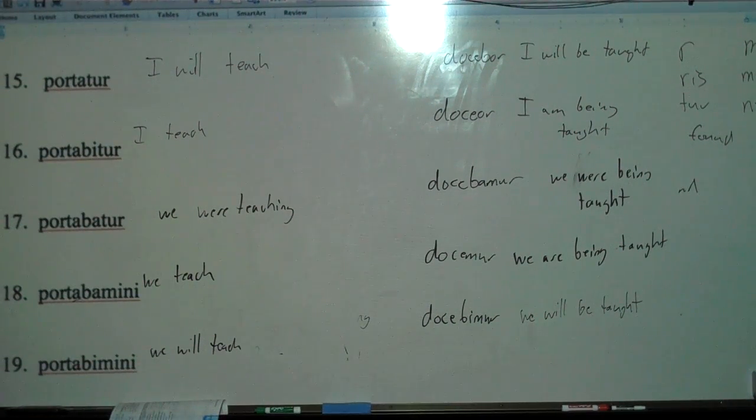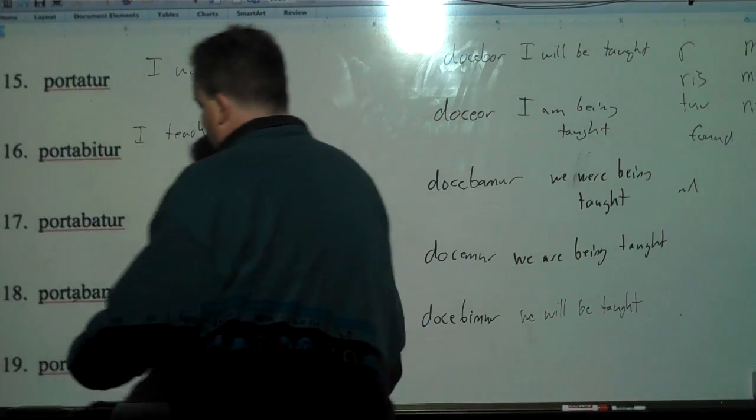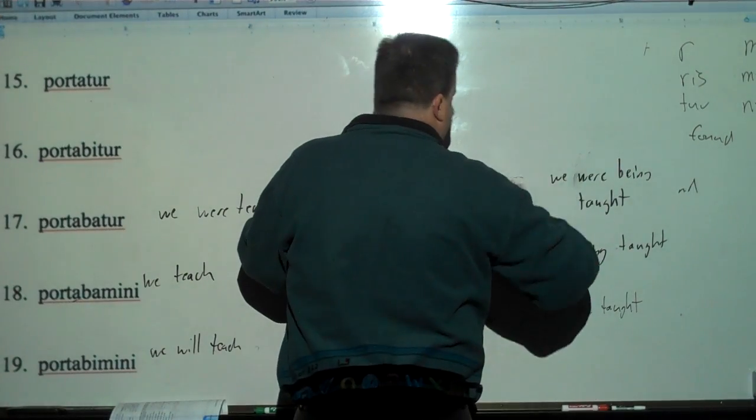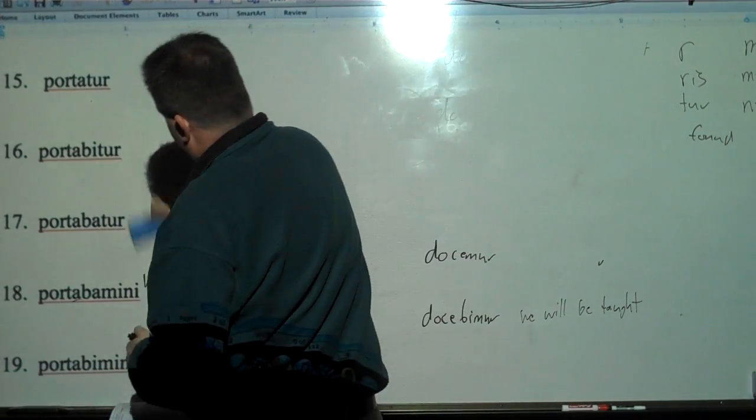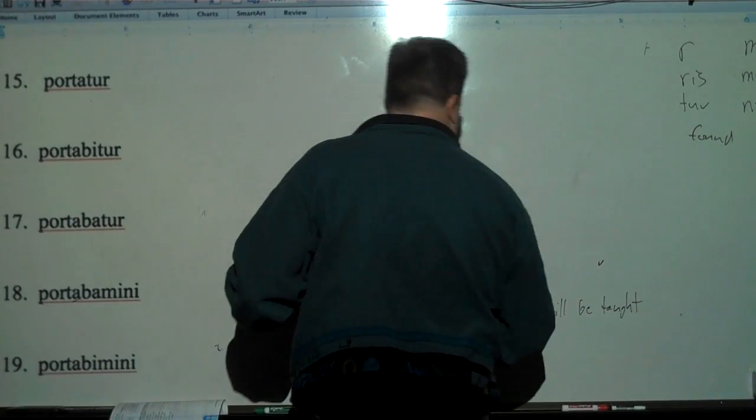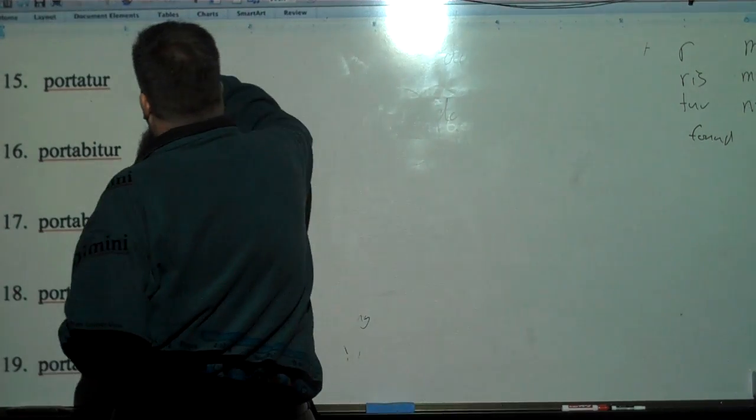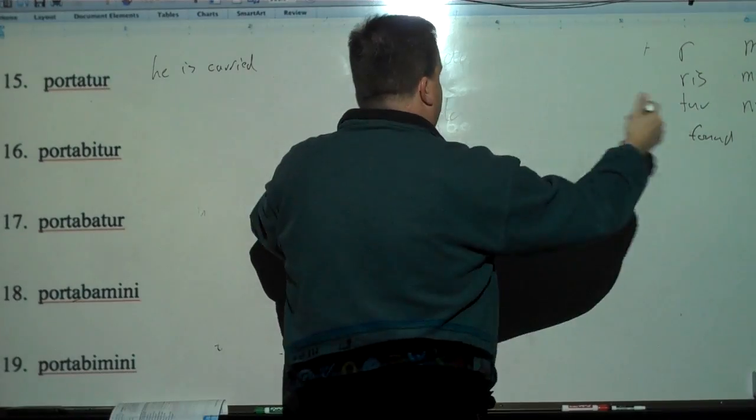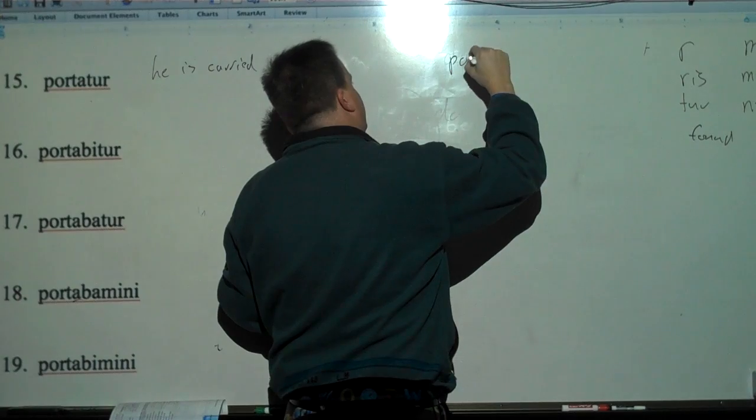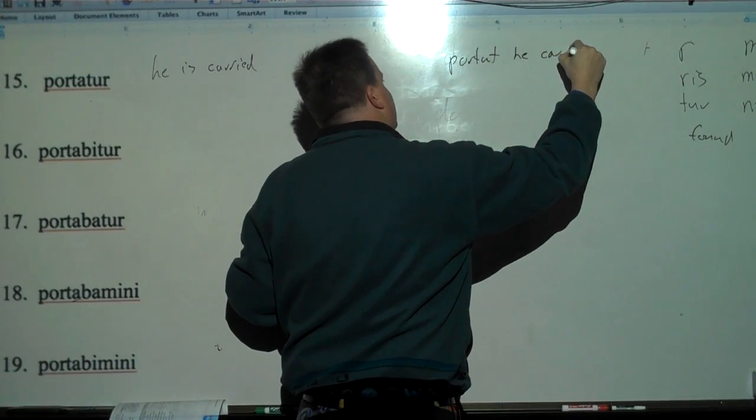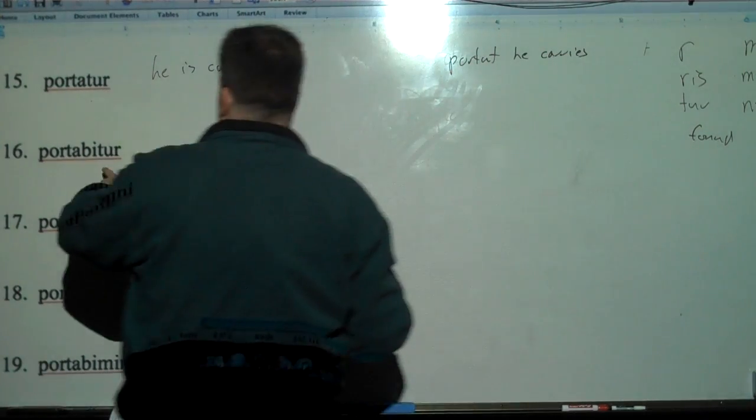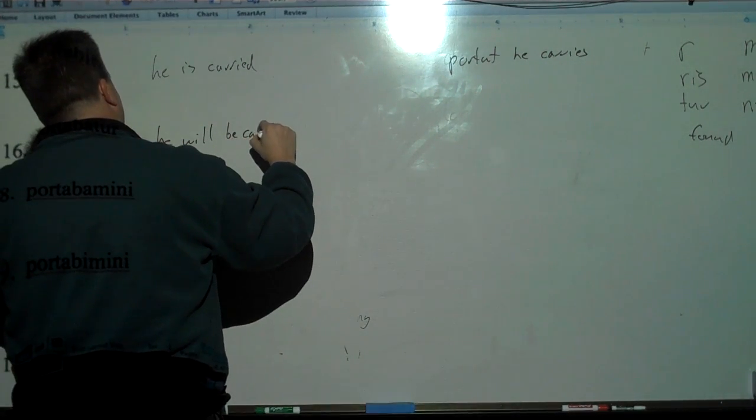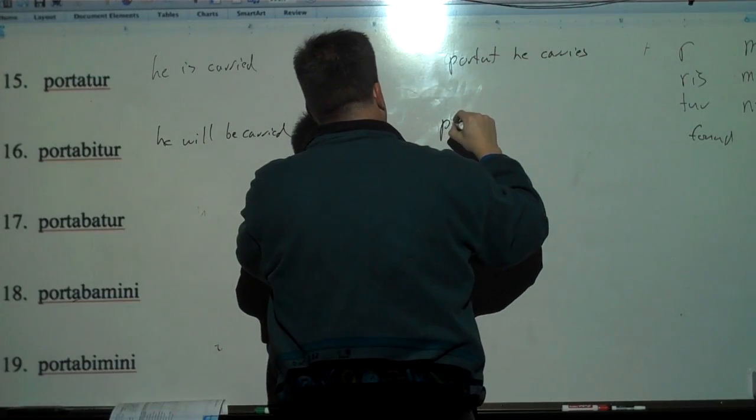Now these guys are going from passive to active. Now I screw up. I make a mistake here down at the end where I switch to active again. So I'm only human. So watch out there. So portatur. That's he is carried. Now we're making active. So we take tur off and put T. So portabit. He carries. Portabitur. He will be carried.